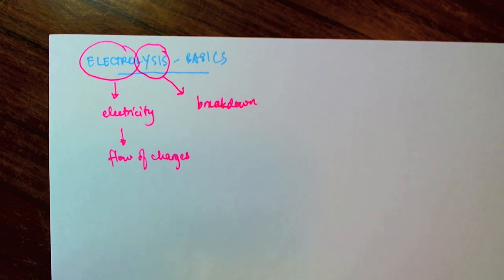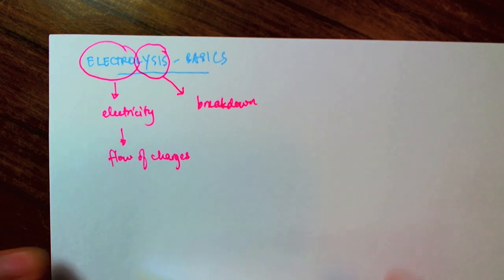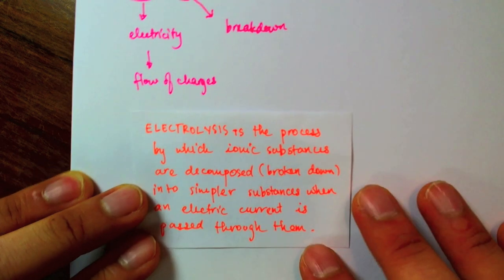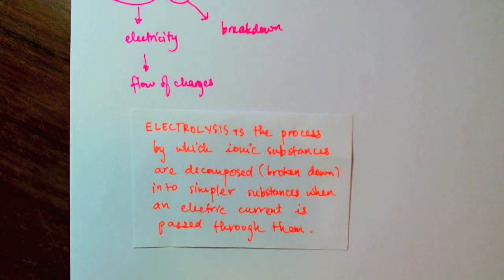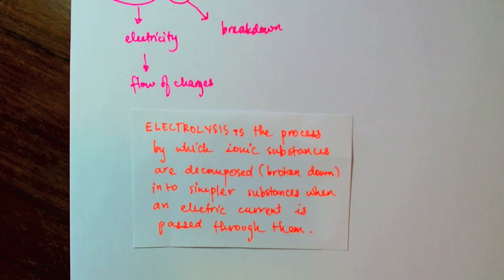Well, I've written down a formal definition of electrolysis here from a textbook. Electrolysis is the process by which ionic substances are decomposed, namely broken down into simple substances when an electric current is passed through them.